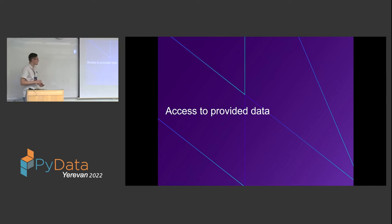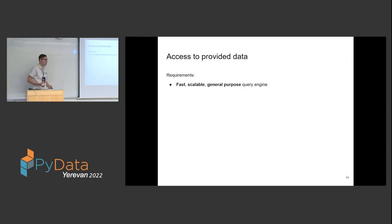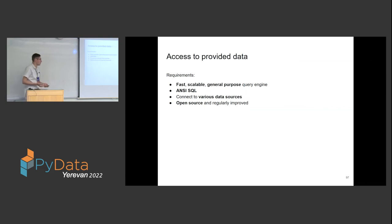Now let's quickly look at the serving layer and how we can access this data once we have it. The requirements: we want a fast, scalable, general-purpose query engine to query big data easily and quickly. It should support ANSI SQL, which everybody is supposed to know. It has to be able to connect to various data sources, and it should be open source and regularly improved.